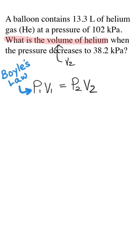The starting conditions are given first. The balloon starts with a volume of 13.3 liters. I'll label that V1. And the pressure is 102 kilopascals. So that will be P1. Then something changes. In this case, the pressure changes. So I'm going to label it as P2.